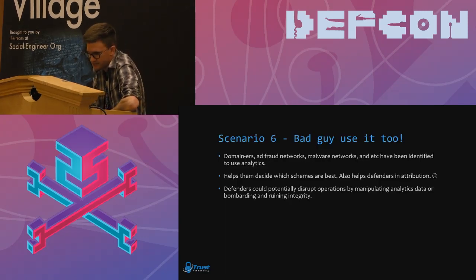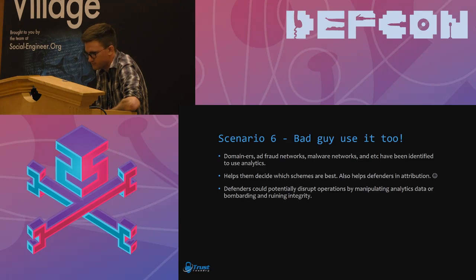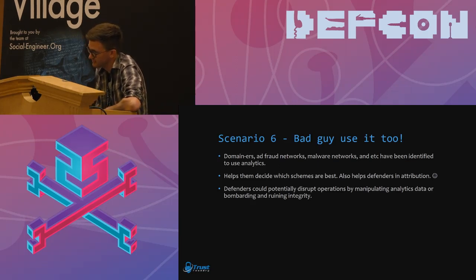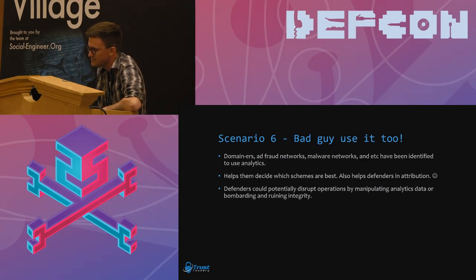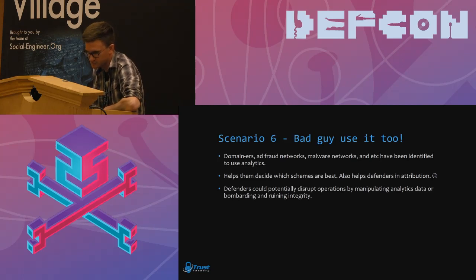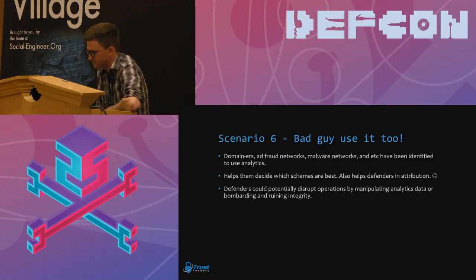An interesting thing that came out of this: not only do the good guys use analytics, but bad guys use it too. Domainers, ad fraud networks, and malware networks have been identified using analytics, because just like the good guys, they need to know where their users — in this case victims — are coming from. This has actually become a form of attribution: if two known bad sites have the same tracking ID, we can assume the same operators are behind both domains. What could be done is to ruin the integrity of their analytics data, which might hurt their ability to operate.